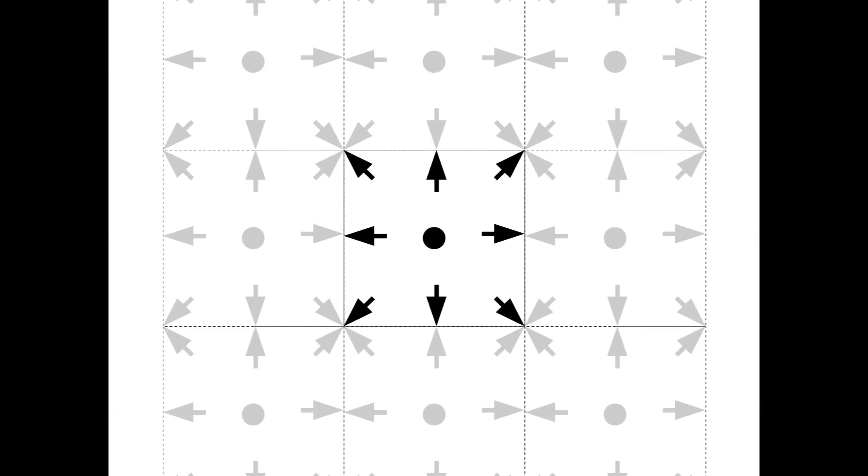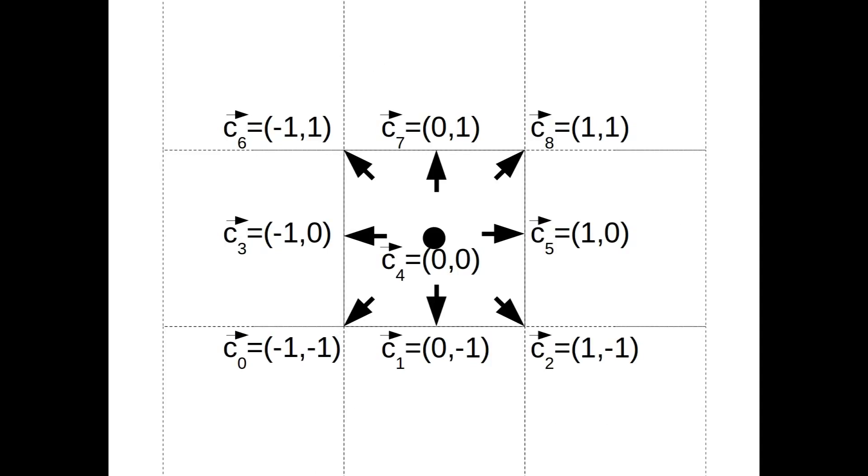In the following, we denote these 9 directions that the particles can move into by C0, C1, and so forth.